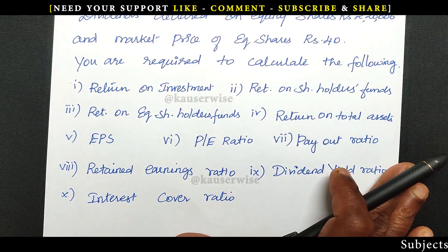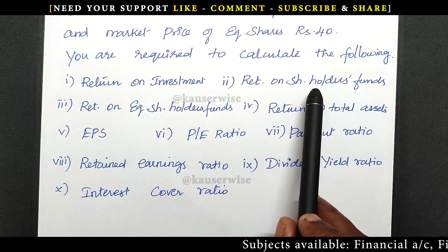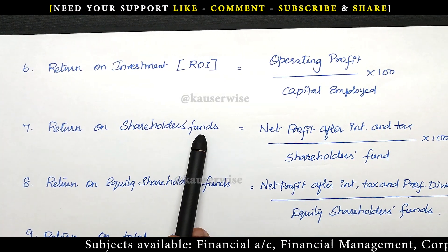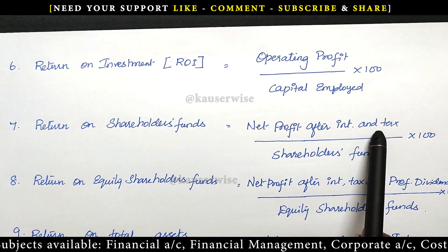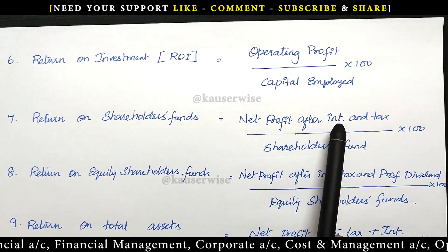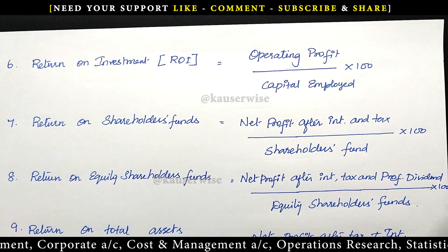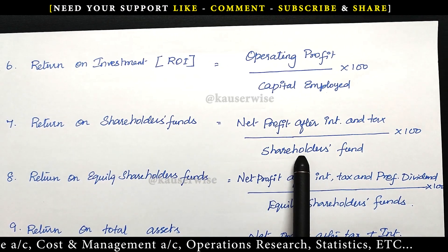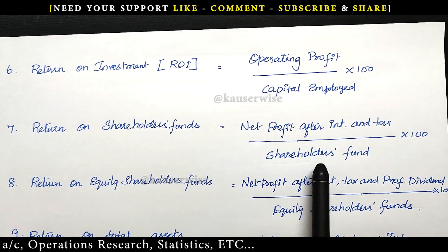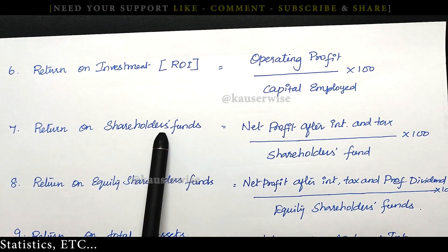The second one is return on shareholders funds. The formula is net profit after interest and tax divided by shareholders fund into 100. Net profit after interest and tax you can find from the income statement — after subtraction of interest and tax, the residual profit is called net profit after interest and tax. Shareholders fund consists of equity shareholders, preference shareholders, plus any reserves and surplus belonging to shareholders. Into 100 gives return on shareholders fund.